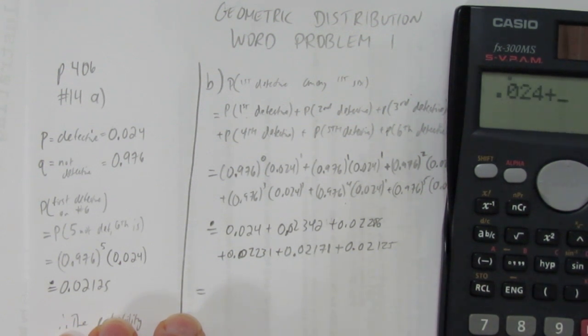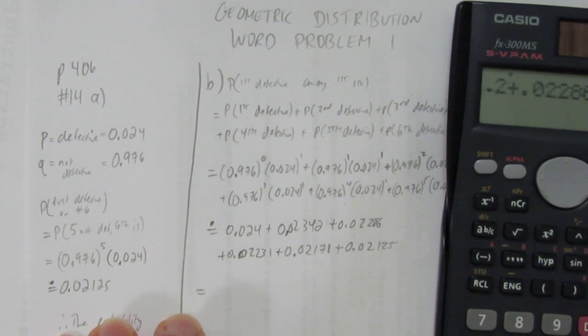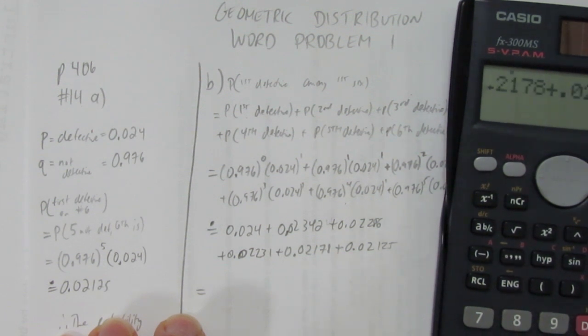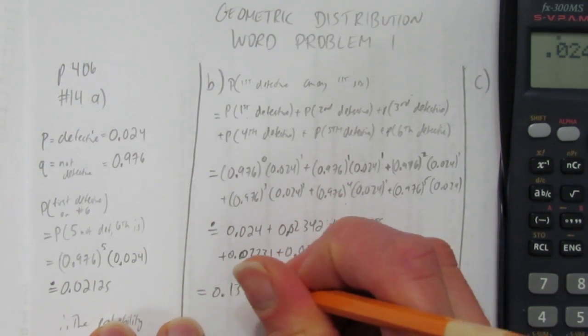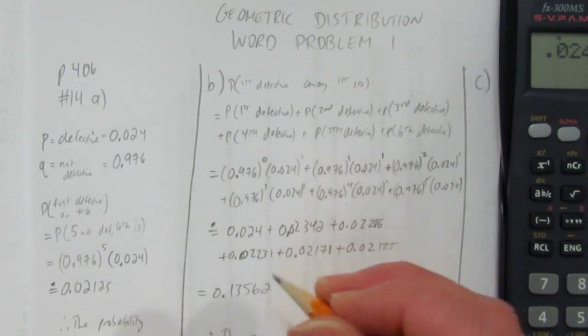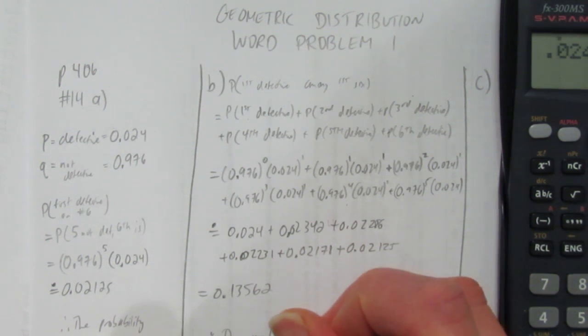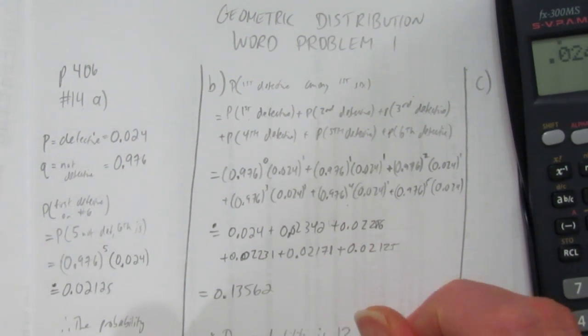0.024, plus 0.02342, plus 0.02286, plus 0.02231, plus 0.02178, plus 0.02125. And you get a final answer, 0.13562. Therefore, in this case, the probability that it's among the first six defective is 13.562%.